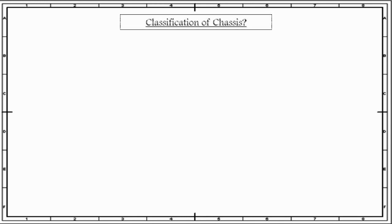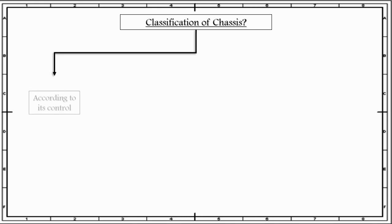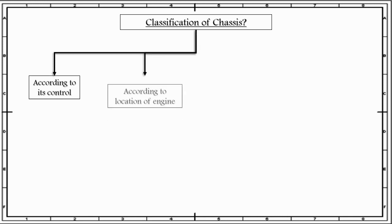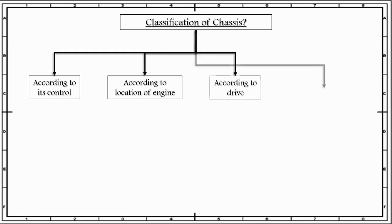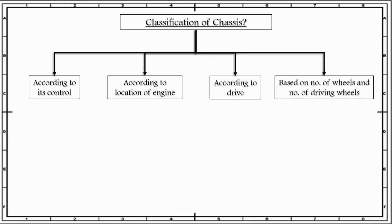Next, let us discuss how we can classify the different types of chassis present in the market. Chassis can be classified according to its control, based on the location of engine, according to the drive, and based on the number of wheels and number of driving wheels.